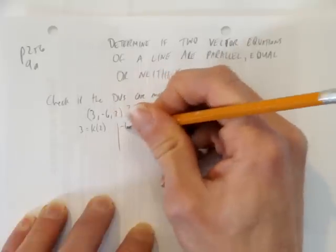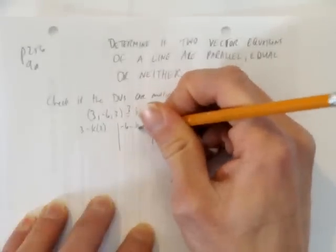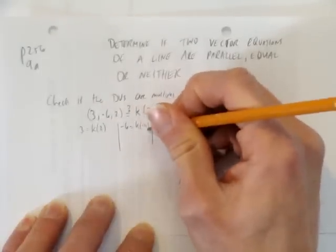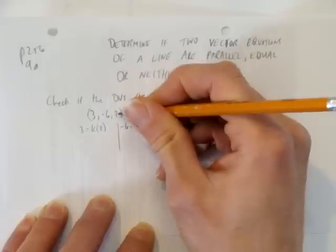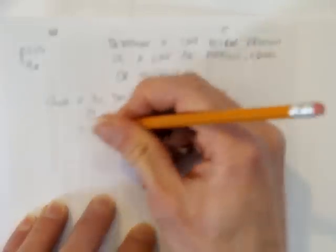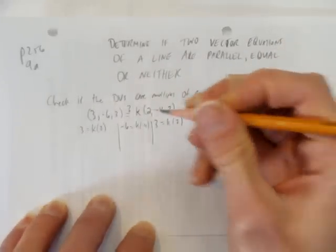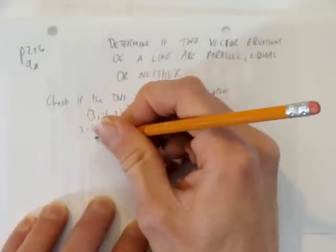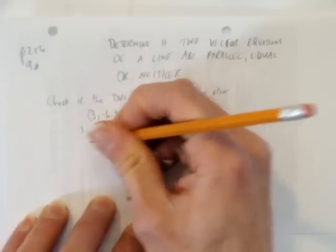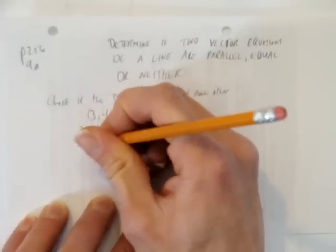In other words, is negative 6 the same k times negative 4? And then finally, is 3 the same k as the previous 2 times 2? And now to solve for k, we just divide both sides by 2, and so k equals 3 over 2, or 1.5.